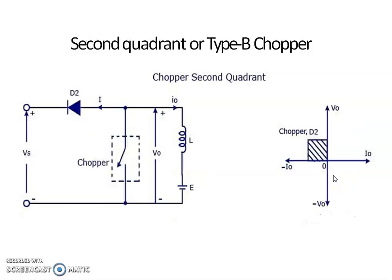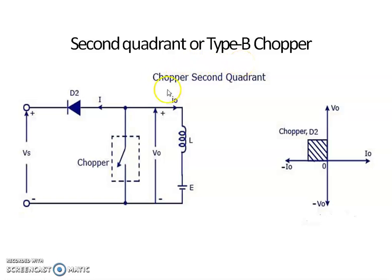Next is the second quadrant chopper. The Type B or Class B chopper is a step-up chopper. It provides second quadrant operation — that is, output voltage is positive but output current is negative.